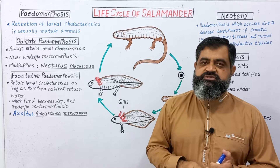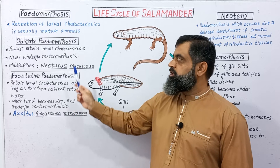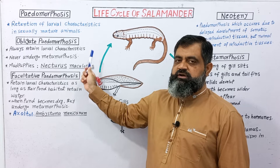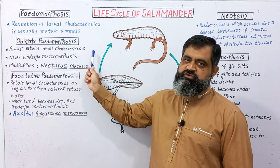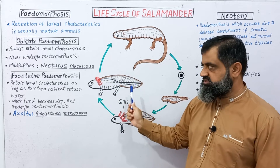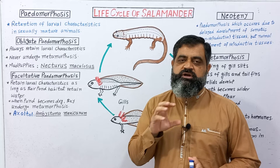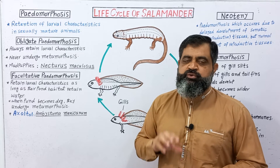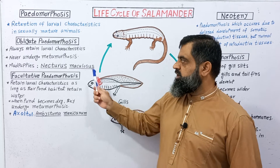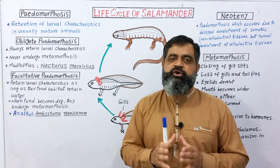Pedomorphosis can be divided into two types: obligate pedomorphosis and facultative pedomorphosis. During obligate pedomorphosis, the larval salamander always retains larval characteristics such as forelimbs, hind limbs, gills, and fins on the tail. It never undergoes metamorphosis and never changes into adult form. This can be due to some hormonal problems. Mud puppies like Necturus maculosus can undergo obligate pedomorphosis.